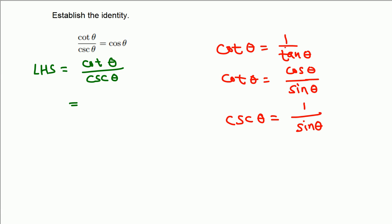Now, since we want to involve sine because cosecant is 1 over sine, we want to go for the second formula. So in the next line, cotangent is cosine theta over sine theta. On the bottom, cosecant is 1 over sine.